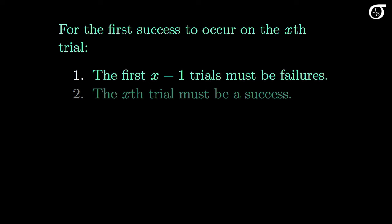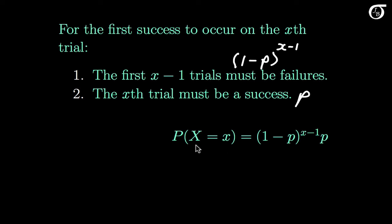Now let's work out the probability mass function for the geometric distribution. In order for the first success to occur on the xth trial, we need two things to occur. First, we need the first x-1 trials to be failures, and then we need the xth trial to be a success. The probability that the xth trial is a success is p. Since the trials are independent, the probability that the first x-1 trials are all failures is 1-p raised to the x-1. Therefore, the probability that X equals little x is (1-p)^(x-1) times p. This is the probability mass function for the geometric distribution.